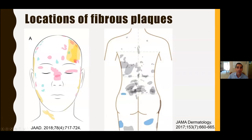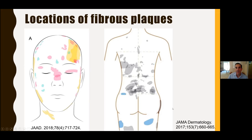We've mapped out the locations of fibrocephalic plaques and shagreen patches across many patients. The fibrocephalic plaque used to be called forehead plaque, but many also occur on the scalp, cheeks, and neck. We felt it was important to expand the name to fibrocephalic plaque to improve recognition that these can occur anywhere on the head. The shagreen patch usually occurs on the lower back but can also occur on the mid back, upper back, and even on the buttocks and thighs. One of our goals has been to improve physician recognition by highlighting this variation.